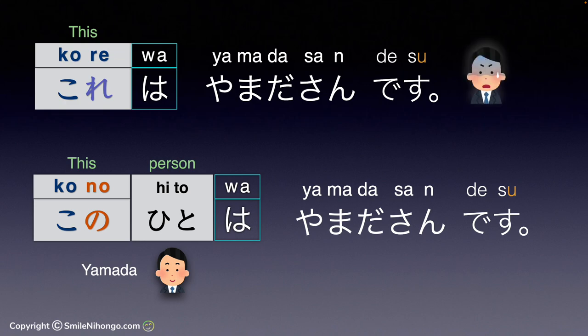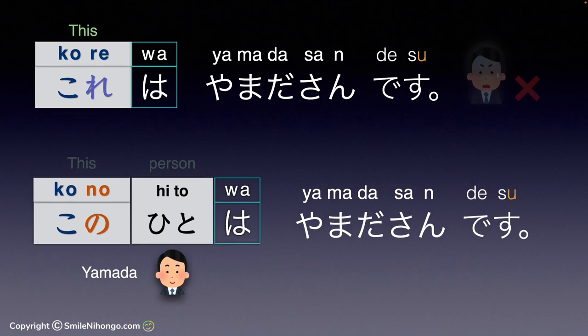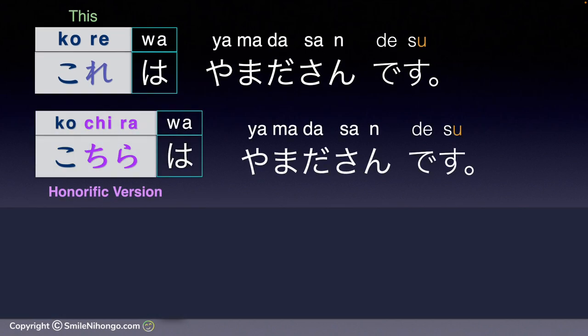Otherwise, you are going to shock 山田さん standing right next to you. On a side note, if you use the honorific version of これ, which is こちら, then it is okay to say 'this is 山田さん': こちらは山田さんです. I will cover the honorific versions of コソア in a future lesson. For now, let's focus on the difference between the Re series and the No series.